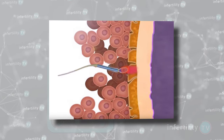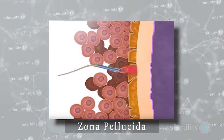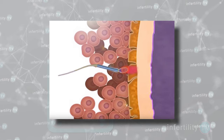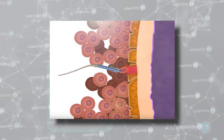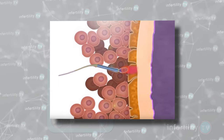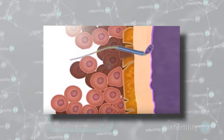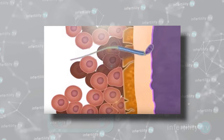Underneath the cumulus cells, there is a hard shell of proteins that surround the egg called the zona pellucida. As the sperm approaches the zona pellucida, some enzymes are released. These enzymes dissolve the zona pellucida to make a passage for the sperm to get through to reach the membrane of the actual egg cell. At some point, with some luck, the surface of the sperm cell will meet and fuse with the surface of the egg cell, and the contents of the sperm are then released into the egg cell.